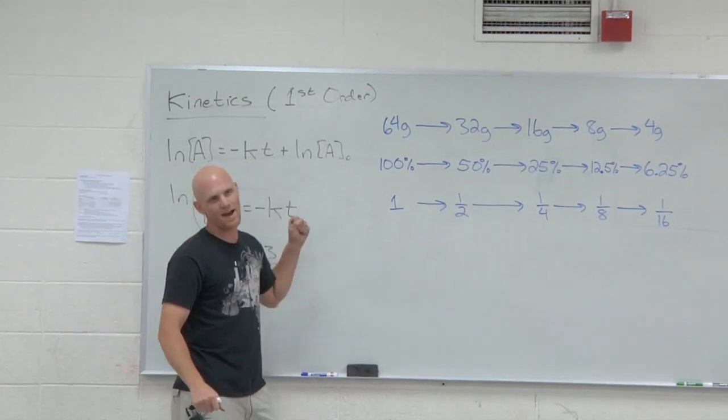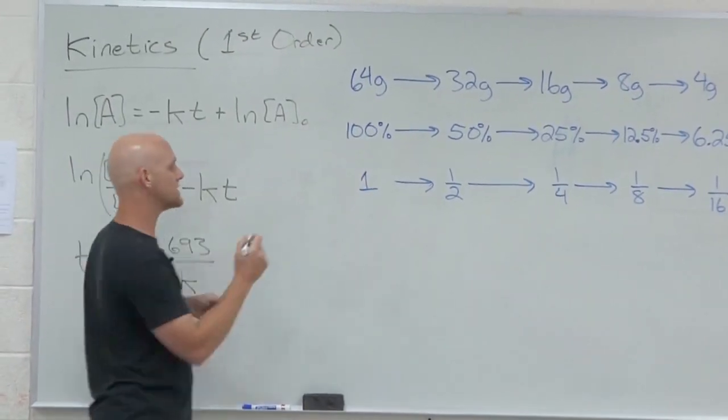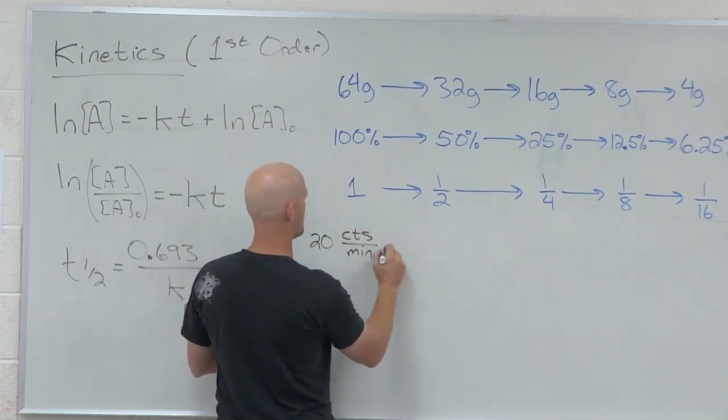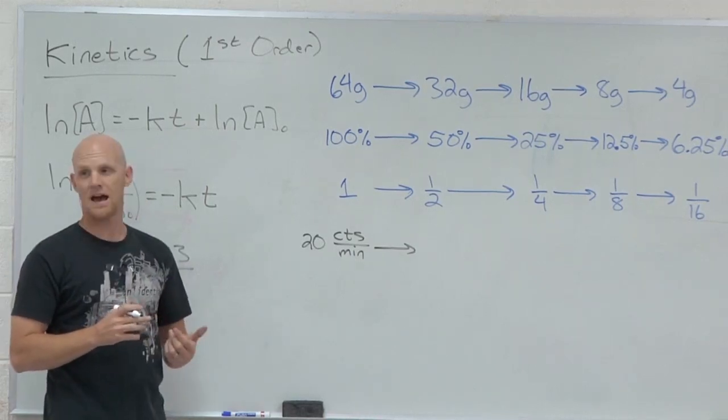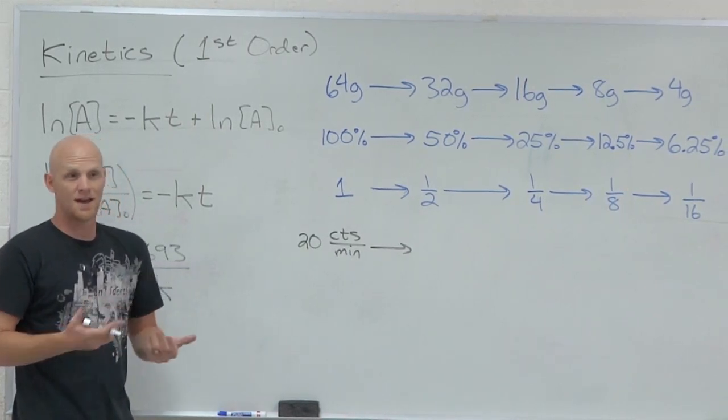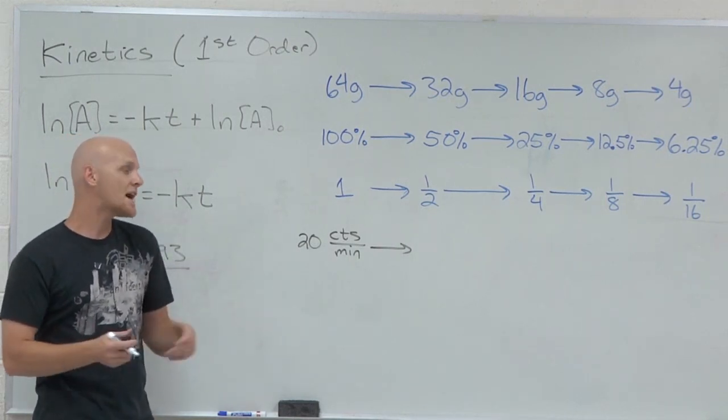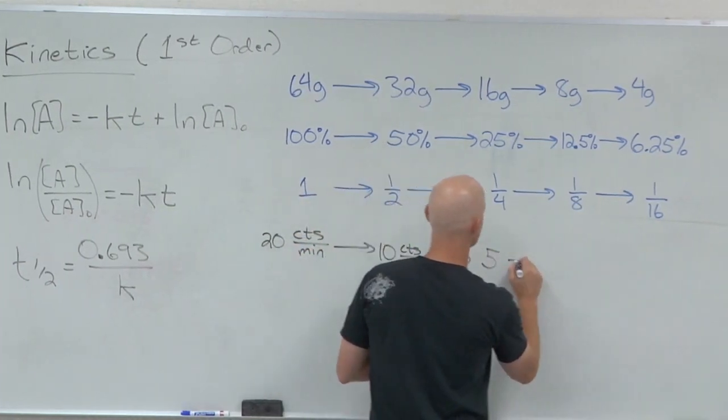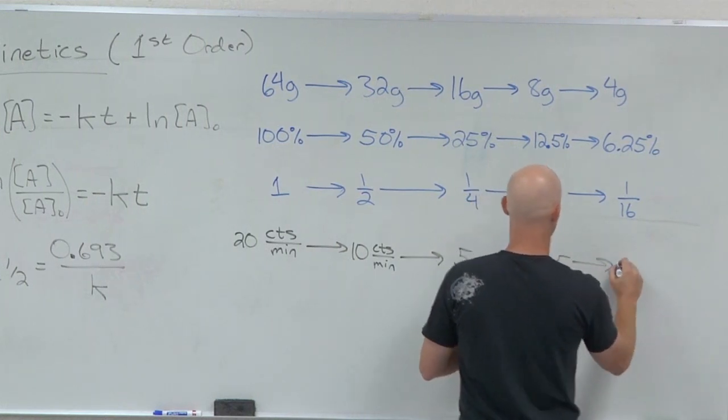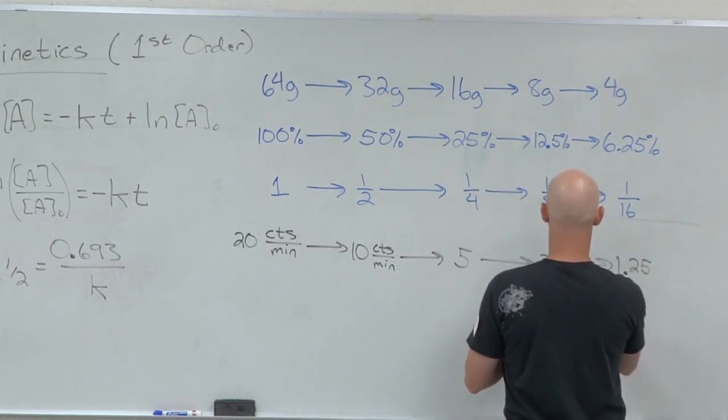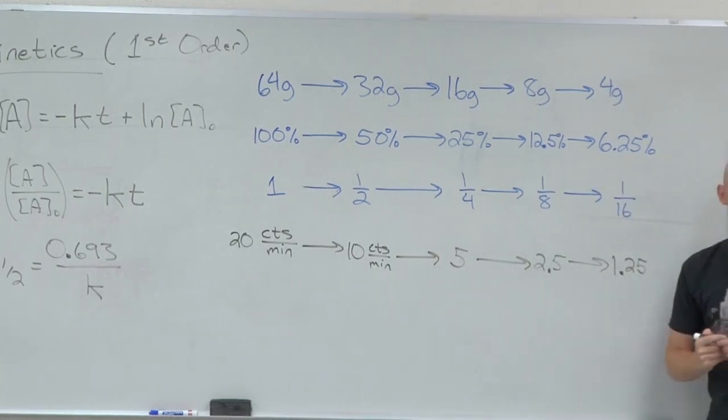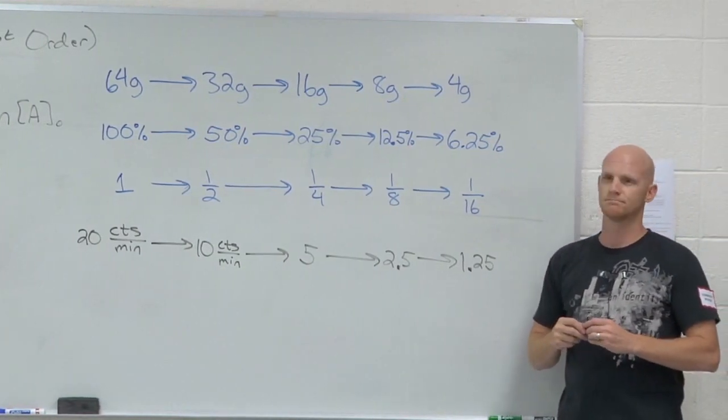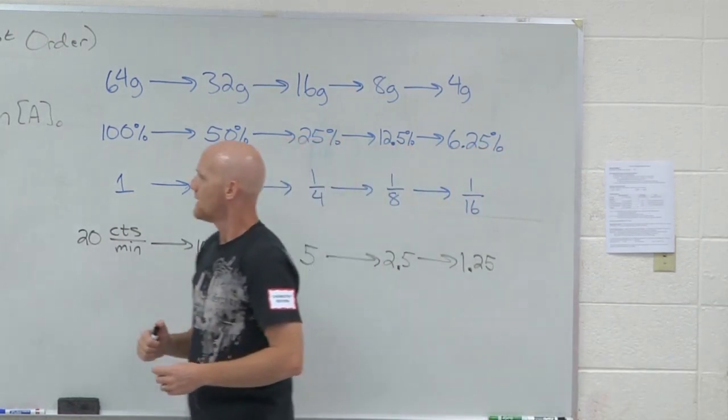So but needless to say Geiger counter can measure the activity. And so let's say I told you that the activity initially here was say 20 counts per minute. What would the activity be after a half-life? Ten. If you have half as much radioactive substance there then you'd only have half the activity as well. And so it works in these units as well. So ten counts per minute, then five counts per minute, then 2.5 counts per minute, then 1.25 counts per minute. So for radioactivity we've got another way to measure the concentration of that radioactive substance.